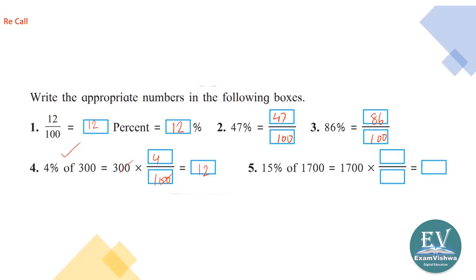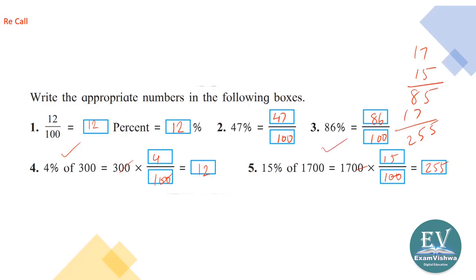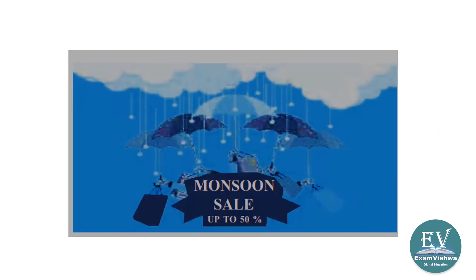15 percent of 1700: you write 15 percent of 1700, cancel, and multiply 17 by 15 to get the answer — this is equal to 255. We studied percentage last year; we know how to calculate 15 percent of 1700 and how percentage is expressed. This knowledge is required now.